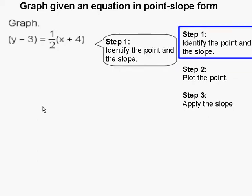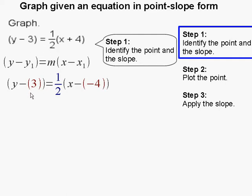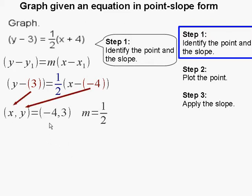Step 1: identify the point and the slope. To identify the point and the slope we must know the point-slope equation: y minus y1 equals m, our slope, times the quantity x minus x1. Comparing the two equations, y1 is 3, our slope m is 1/2, and since this is plus 4 it is the same as minus negative 4, and minus a negative becomes plus 4. So our point is negative 4 comma 3, and our slope is one half.